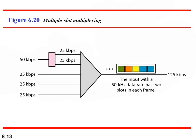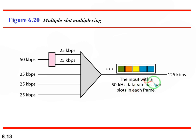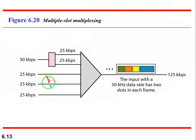For multi-slot multiplexing: we have links at 20 kbps, 20 kbps, 20 kbps, and one at 50 kbps. We separate the 50 kbps into two — 25 and 25 — then the MUX combines all low-rate channels into one high-rate channel. The input with 50 kbps data rate gets two slots per frame because 50 kbps is a multiple of 25 kbps.